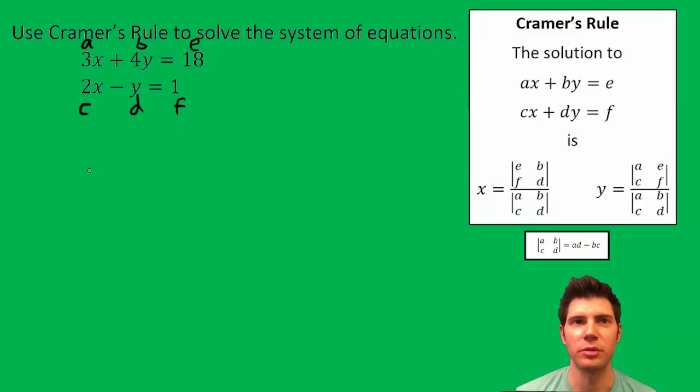So now we can use the Cramer's Rule formula. X equals, and it's going to be two determinants in a fraction. So E, F, that's 18 and 1. And then B, D is the Y ones. So this would be 4 and negative 1.